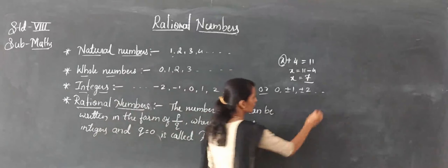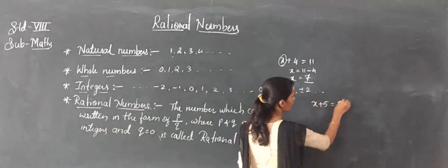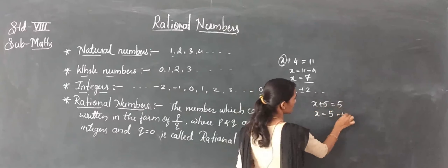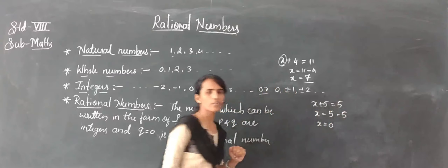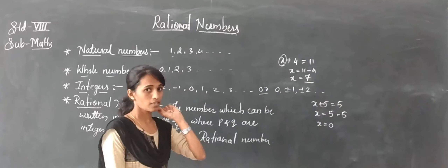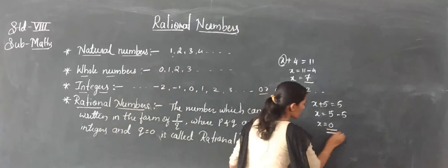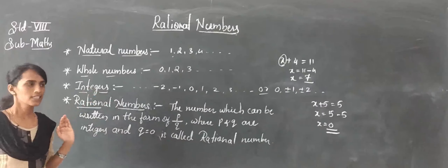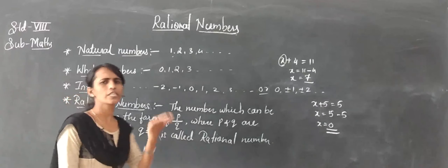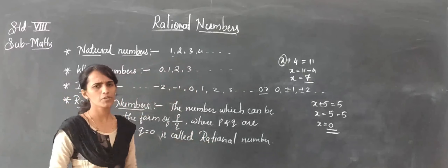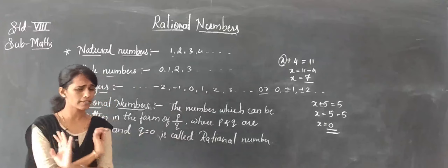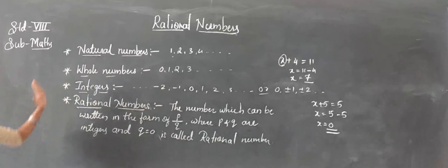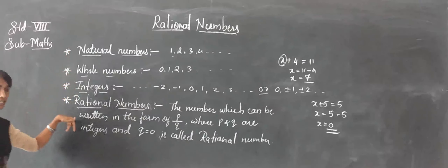Consider another example: x plus 5 equals 5. So x equals 5 minus 5, which gives x equals 0. When we substitute 0 in place of x, we can solve the equation. Is 0 a natural number? No. But 0 is a whole number and also an integer. So to solve any equation, we need all types of numbers — natural numbers, whole numbers, integers, and rational numbers.